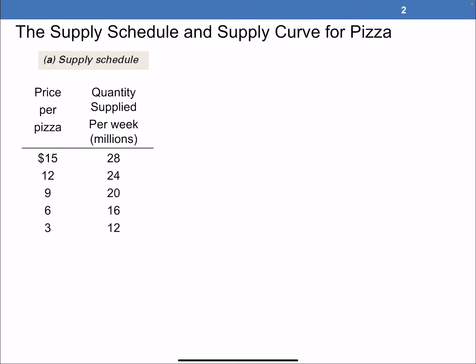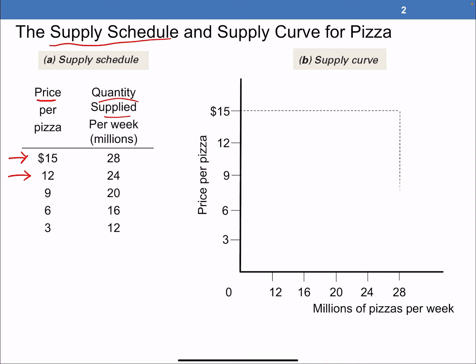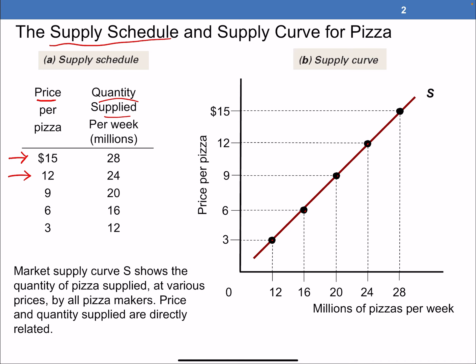This is the firm side of the market, so now we have to think like we are a company. We're going back to our original example with pizza. This is called a supply schedule — it shows us at all these different prices of pizza the quantity that our firms are willing and able to supply. To get from the supply schedule to our supply curve, we take each combination and plot it on a graph: 15 and 28, 12 and 24, 9 and 20, 6 and 16, 3 and 12. We connect all of our dots and we have our upward sloping supply curve.